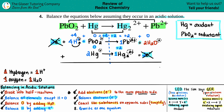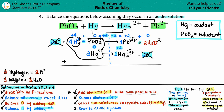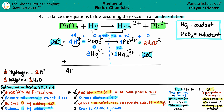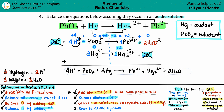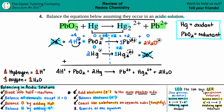Step eight: take what's left and add it together into one final equation. Anything on the left stays on the left; anything on the right stays on the right. So: 4H⁺ + PbO₂ + 2Hg yields Pb²⁺ + Hg₂²⁺ + 2H₂O. Box it off — that's your balanced equation in acidic solution.